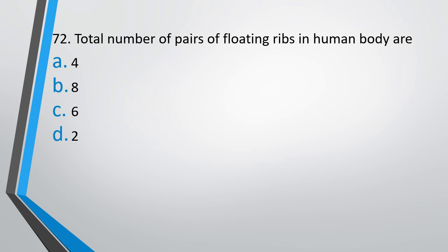Question number 72. Total number of pairs of floating ribs in human body are 4, 8, 6 or 2. We are talking about pairs of floating ribs. The correct answer is option D. There are 2 pairs of floating ribs in human body.